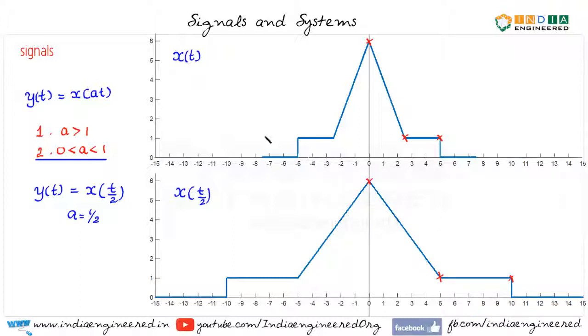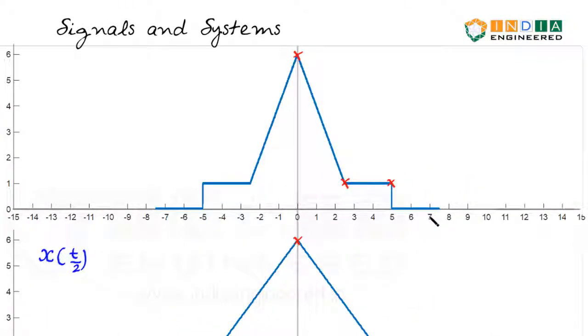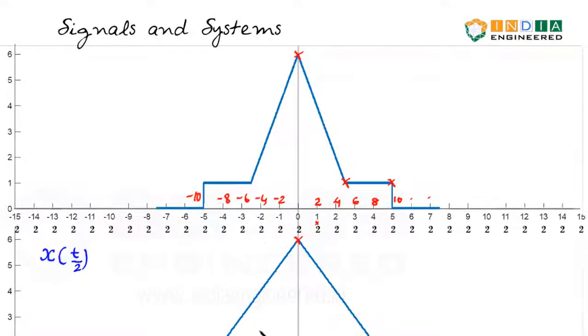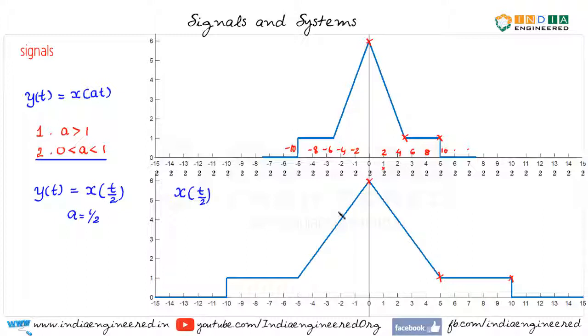Similar to the previous case, the easiest way to see how the time scaled version will look like is to multiply the independent variable by 2 in this case. So, this point will be 2, this will be 4, this will be 6, 8, 10 and so on. Here, it will be minus 2, minus 4, minus 6, minus 8, minus 10 and so on. Both these signals are same except that we use different scales.